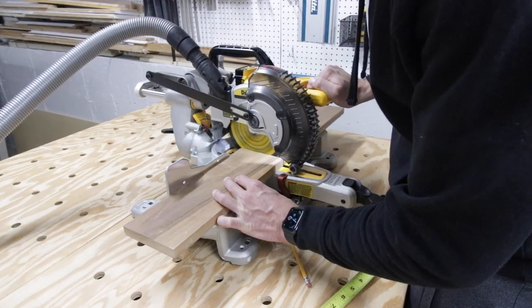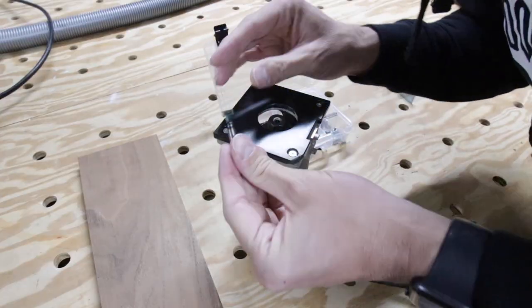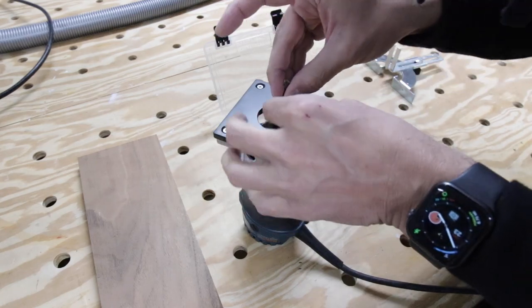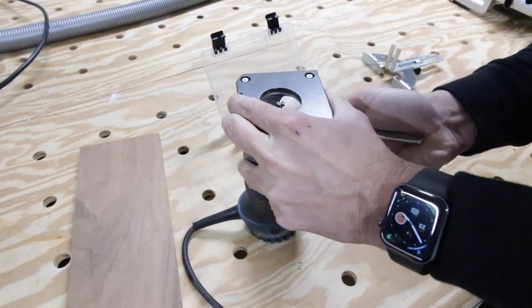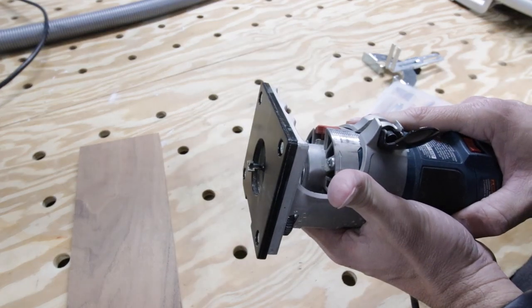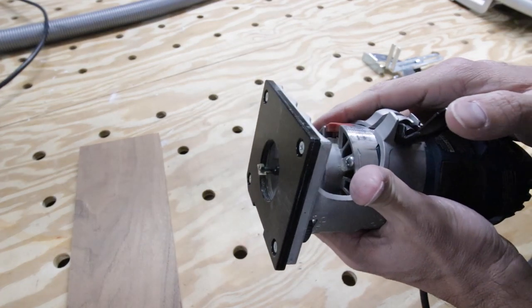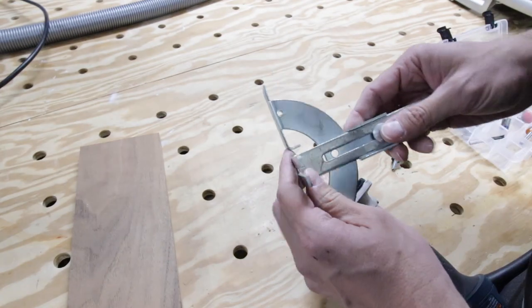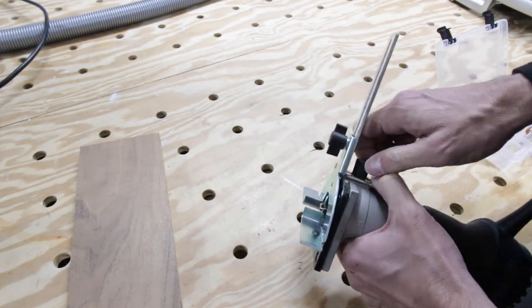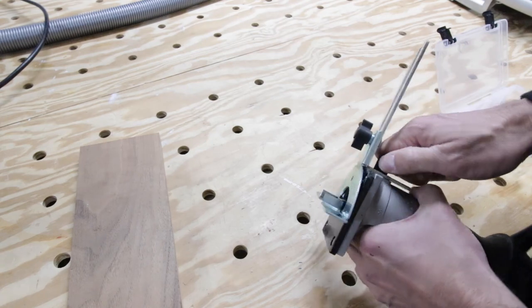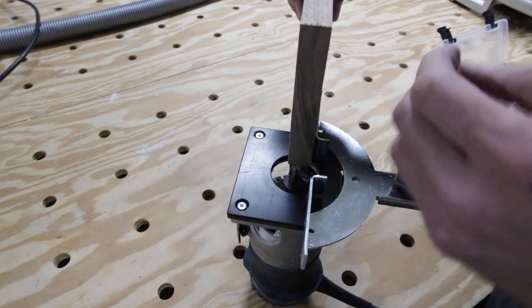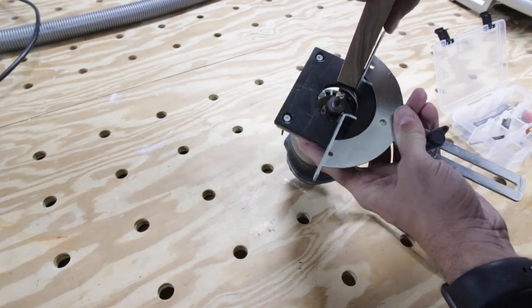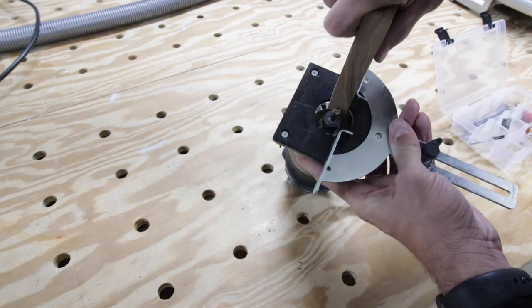All right, now the fun part. This is the keyhole router bit I was talking about—I'll have a link to that product below in the show notes. I tighten it up in my router here, and this is about the depth that you want. My router comes with a guide that you can attach to the router itself, which is perfect for this application. I'm gonna attach it here and then adjust it on the board so the router keyhole is going to be right in the middle of the board.